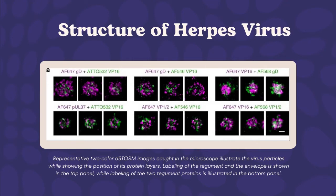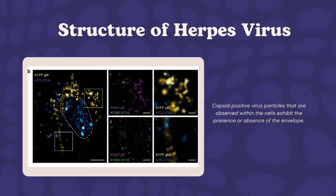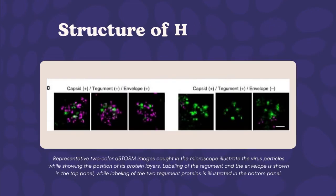Shown on the screen are images obtained from a microscope. Figure A represents two-color direct stochastic optical reconstruction microscopy, or D-STORM images, illustrating virus particles and the position of protein layers — with tegument and envelope labeling in the top panel and two tegument proteins in the bottom panel. Figure B shows four-color imaging of HSV-1 within a fixed HFF-TERT cell with the nucleus indicated by a dashed line. Figure C shows capsid-positive virus particles within cells, exhibiting the presence or absence of the envelope.